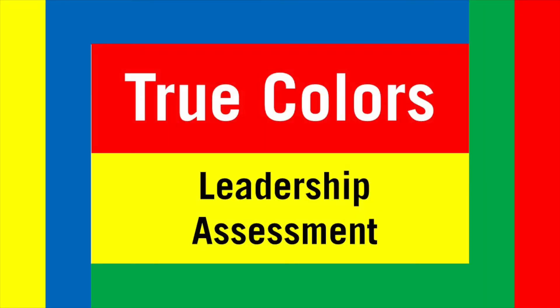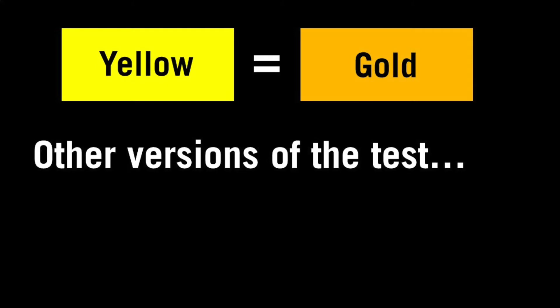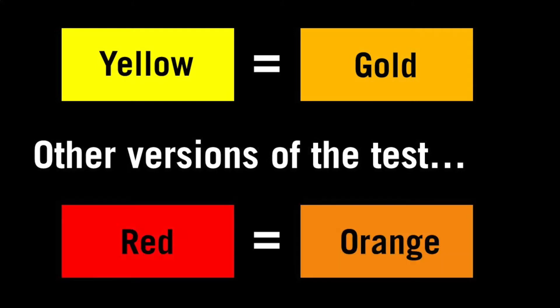Before we take this assessment, some things to know. You can watch this video by yourself, in a group as part of a meeting, or just send this video to others and compare results. This test has been facilitated by many people. Some folks interchange the yellow color with gold, and some say orange instead of red. I keep it simple with the primary colors — just know that there are some variations out there.